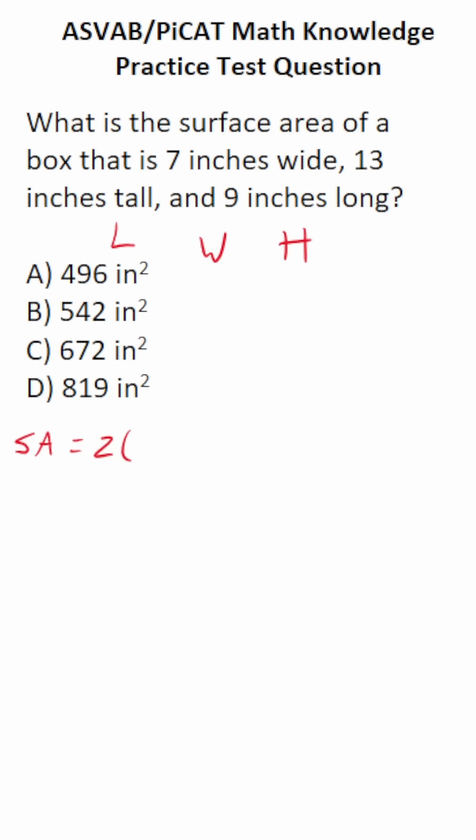We have 2 times length times width, plus 2 times length times height, plus 2 times width times height. And just like that, we found this formula to find the surface area of a rectangular prism.